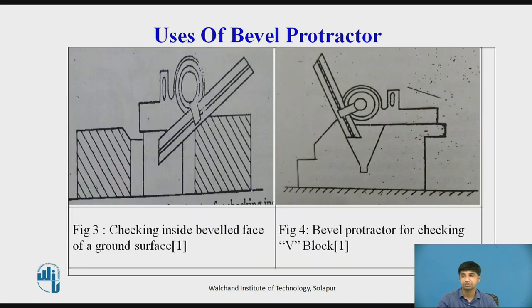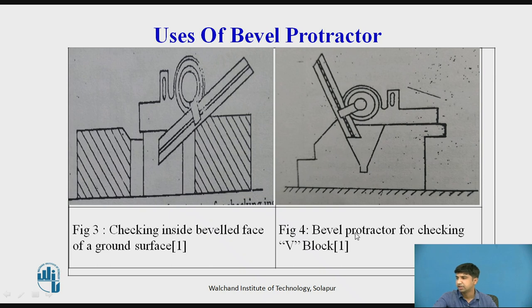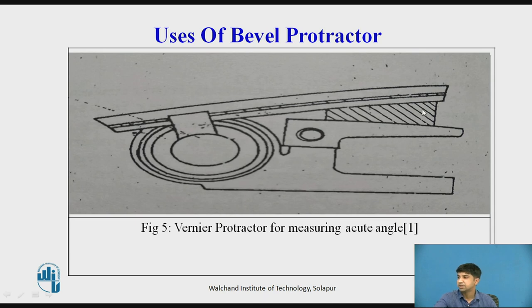Uses of Bevel Protractor. First, it is used for checking the inside beveled face of a ground surface — the blade is mounted and the stock is placed on the surface to measure the angle. Second, for checking a V-block — the blade is placed on the V-block and the base plate stock is on the surface. Third, the workpiece is placed on the acute angle attachment and the angle is measured.